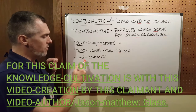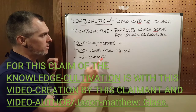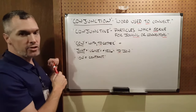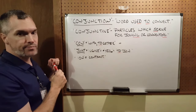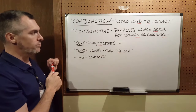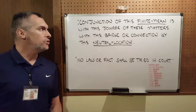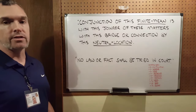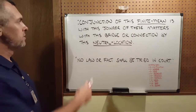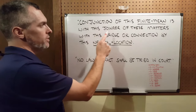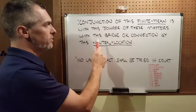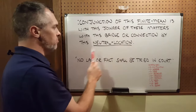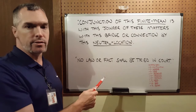And then we have ION, which is 'contract,' which is the same thing as the IVE in 'conjunctive.' I have defined conjunction in the correct sentence structure Parse Syntax Grammar as: for the conjunction of this finite mean is, with this joinder of these matters, with this bridge or connection, by this neutral location.